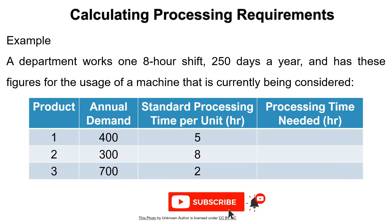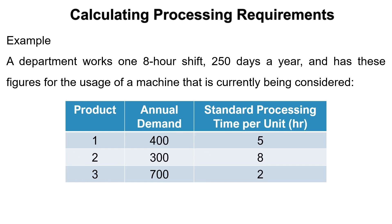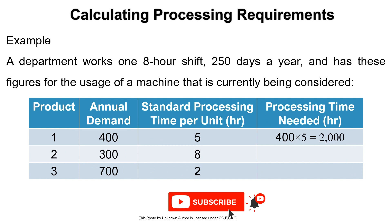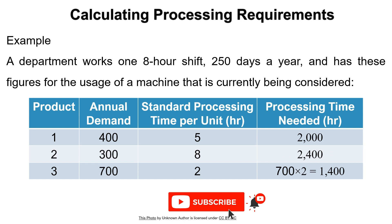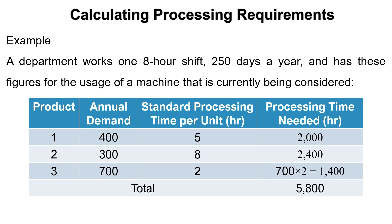First, we need to find the processing time needed in hours by multiplying the annual demand of each product by its standard processing time per unit. For the first product, it is 400 × 5 = 2,000 hours. For the second, it is 300 × 8 = 2,400 hours. For the third, it is 700 × 2 = 1,400 hours. The total needed processing time equals 2,000 + 2,400 + 1,400 = 5,800 hours.